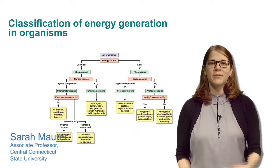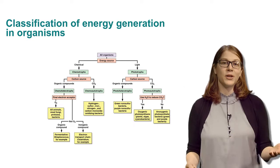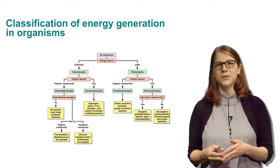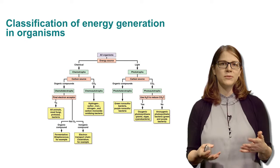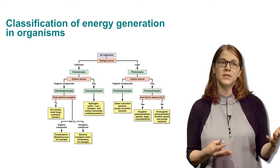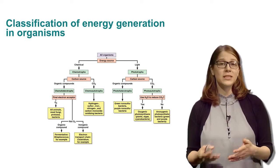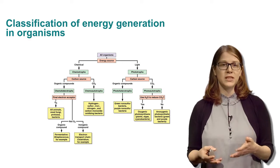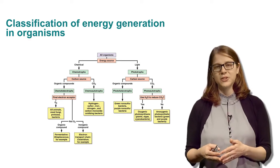Hi, I'm Sarah Maurer and today I'm going to be telling you about early metabolisms and how metabolisms evolved into what we see today. When we think about all life on earth, we divide it into how it metabolizes matter. So essentially we divide it into chemotrophs, which are the organisms that survive on chemical energy, and phototrophs, the organisms that survive on light energy.